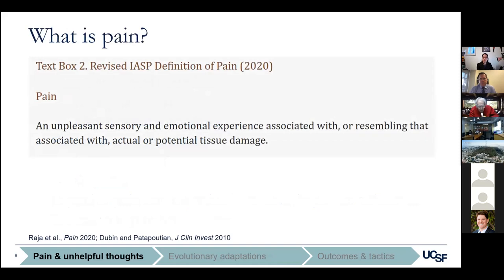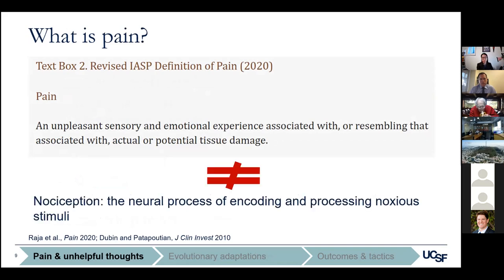First, we need to define what pain is. The International Association for the Study of Pain defines pain as an unpleasant sensory and emotional experience associated with or resembling that associated with actual or potential tissue damage. Pain is not the same as nociception, which is the neural process of encoding and processing noxious stimuli. The IASP further emphasizes that pain is a personal, individualized experience influenced by biological, social, and psychological factors, and it's learned through life experiences. This is what makes pain such a difficult concept to define and address.